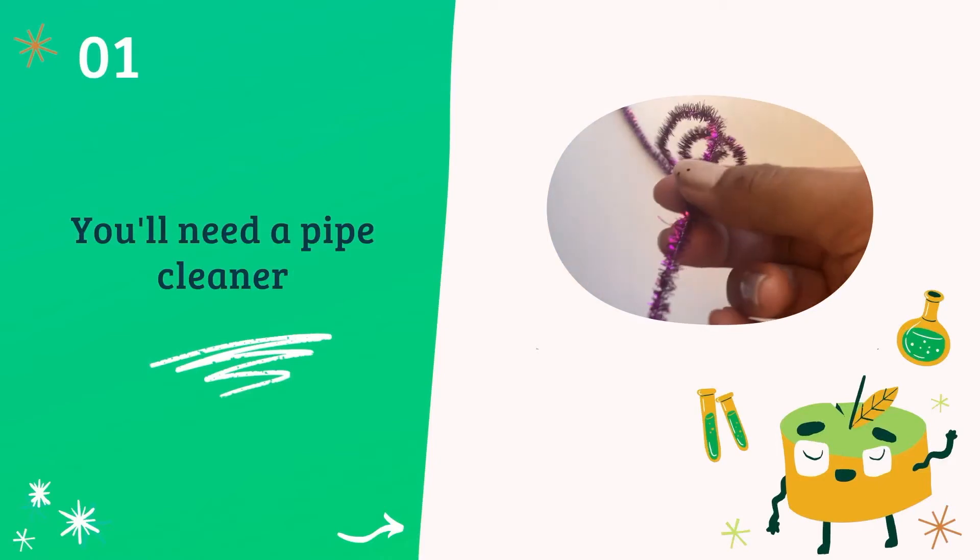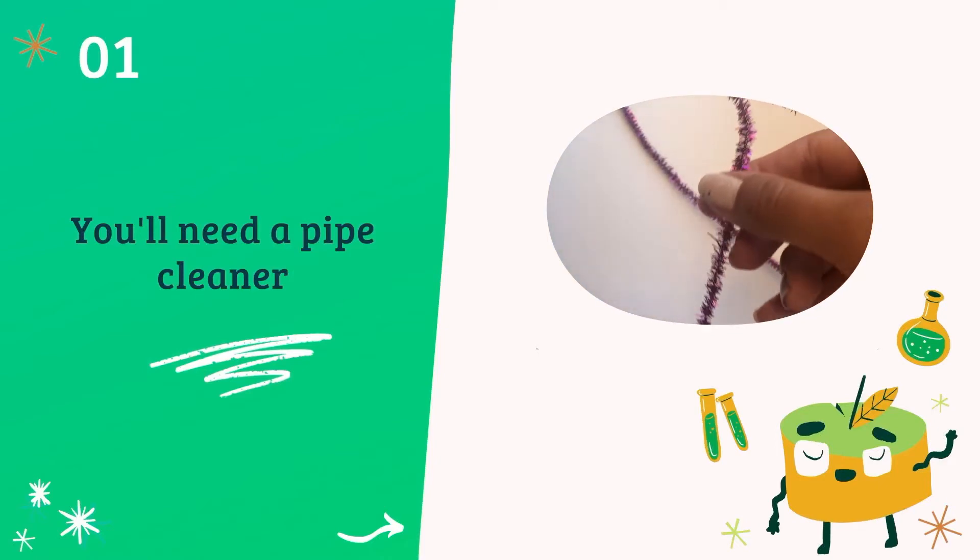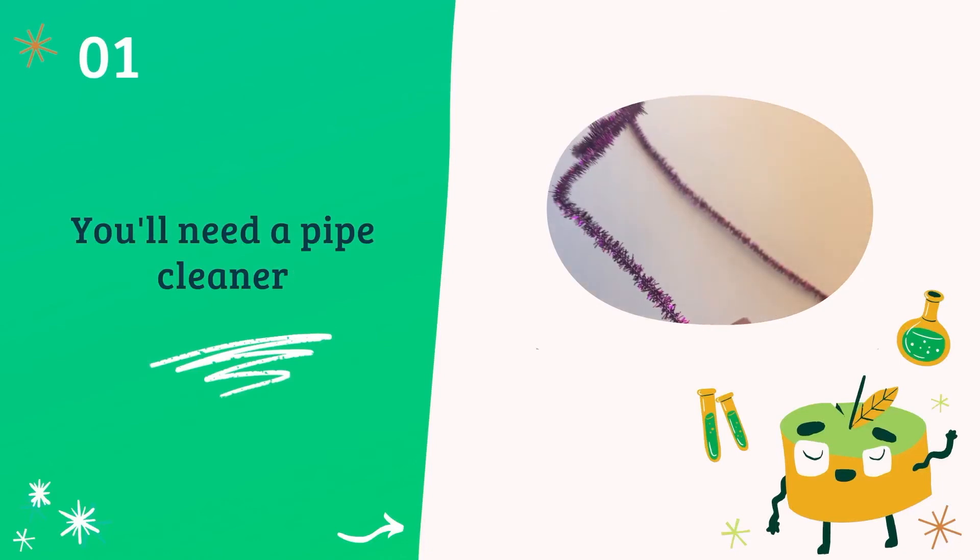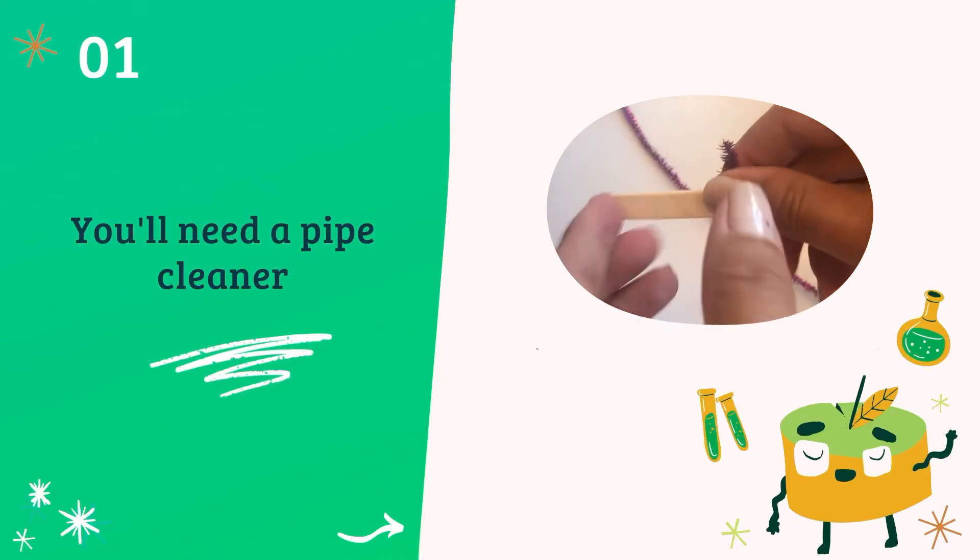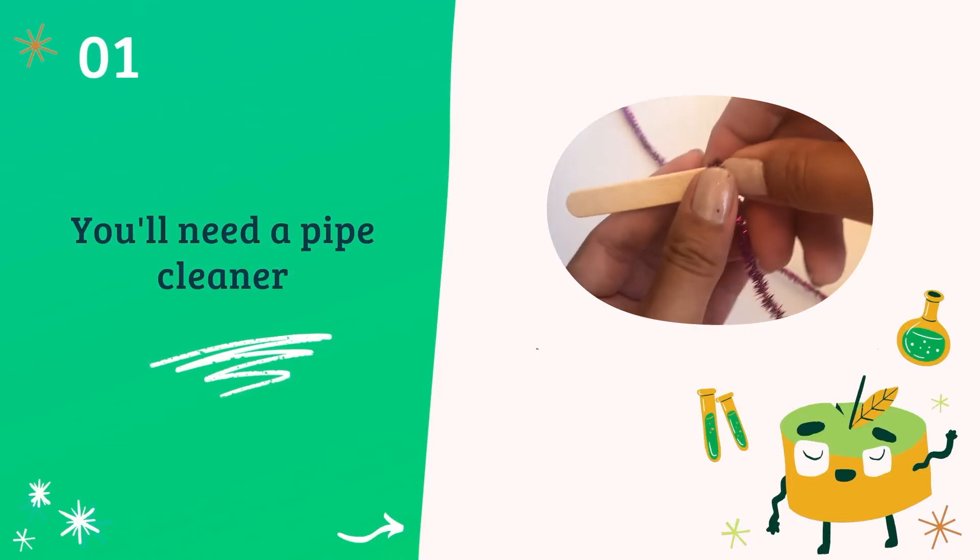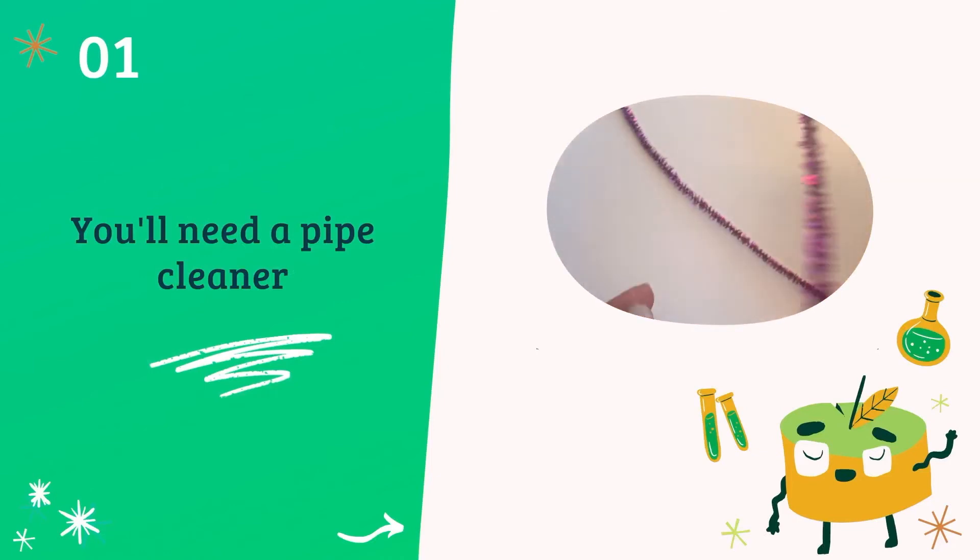Just two things to remember when you create your shape. Make sure that it can fit into the jar without touching the sides or bottom. This is so it'll be easier to get the pipe cleaner out of the jar without breaking any of the crystals that form on it. And leave enough of the pipe cleaner so that it can hook on to the popsicle stick. If you don't have a pipe cleaner or popsicle stick, you can still use a piece of string or pen and pencil.